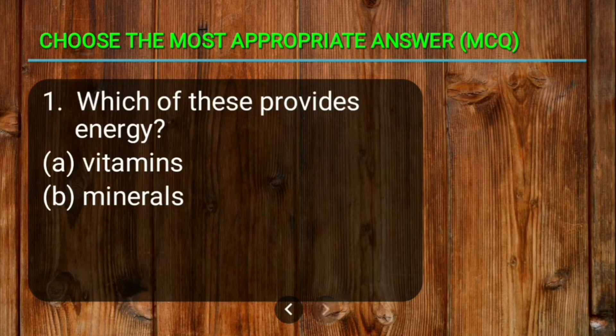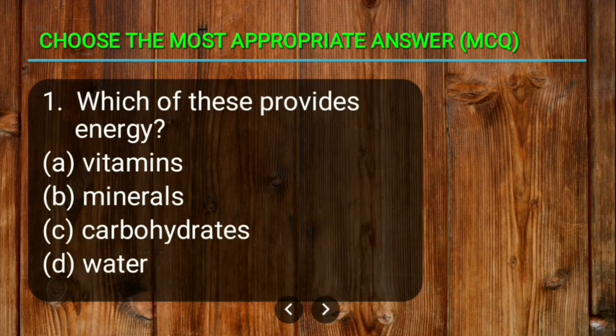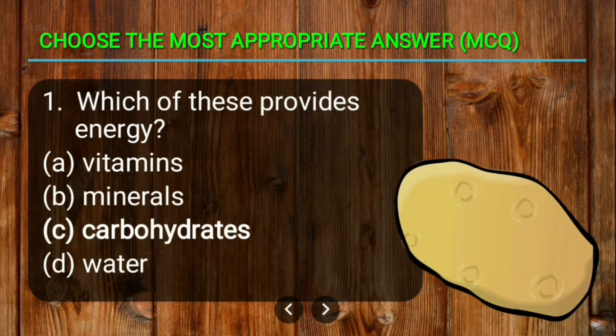The options are vitamins, minerals, carbohydrates, and water. The correct answer is carbohydrates. Among all the nutrients, carbohydrates and fats provide energy. The options mentioned here are vitamins, minerals, carbohydrates, and water, so amongst these only carbohydrates is a nutrient that provides energy. Fats also provides energy but that is not among the options.